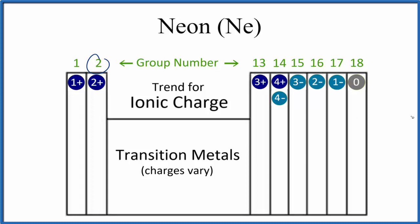Neon is right here on the periodic table. It's in group 18. So elements in group 18 form an ionic charge of 0, and that's because they're noble gases. In general, noble gases don't bond with other elements and they don't form ions when they bond.